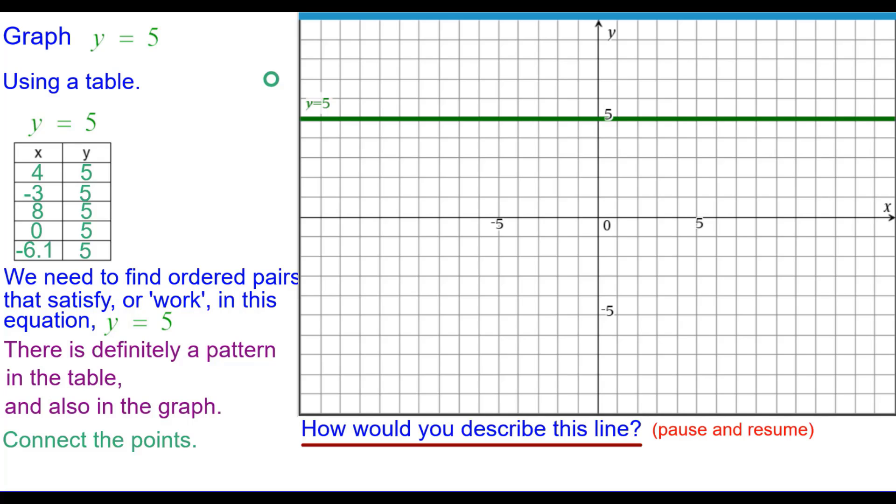How would you describe this line? Please press pause and resume when you're ready. It is a horizontal line because it does go along the horizon and it also is a line that has a slope and the slope is the number 0.